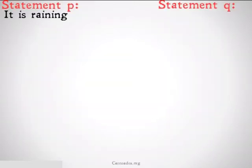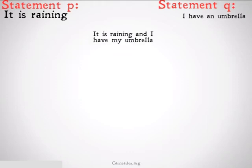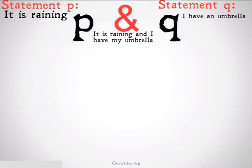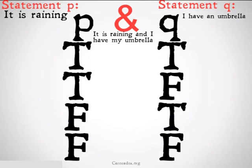Now let's take a look at the truth tables. P is 'it is raining,' Q is 'I have an umbrella,' and I want to write 'it is raining and I have an umbrella,' so I would write P ampersand Q. I know how to fill in the truth tables for P and Q, but what do I put under the ampersand?